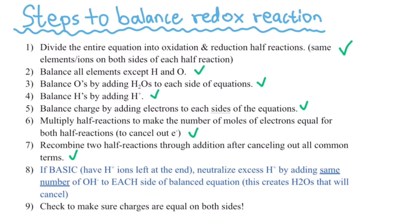Number eight only applies if it's a basic solution. So if they tell you it's an acidic solution, just follow steps one through seven and nine — check both charges on both sides, and then you're done. If it's basic, you have an extra step. You do number eight, which means that when you see the excess hydrogen ions, you just have to add the same number of hydroxides to each side of the balanced equation. If you do that, this will create water. The waters will then likely cancel. So if it's acidic, follow one through seven and nine. And if it's basic, do one through nine. We will go over them right now in two examples.